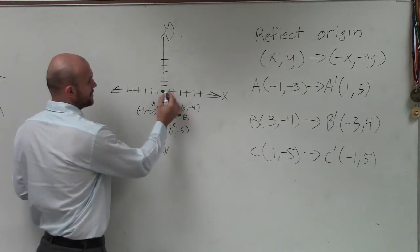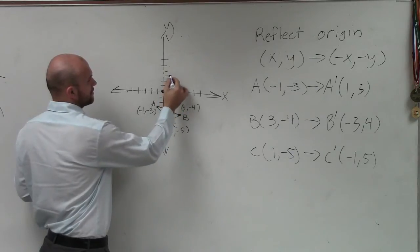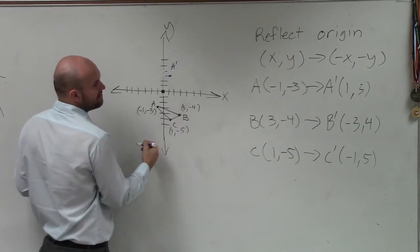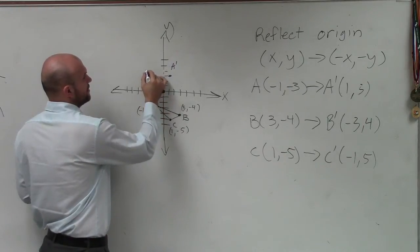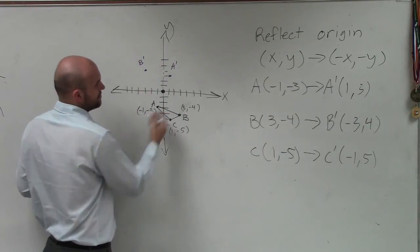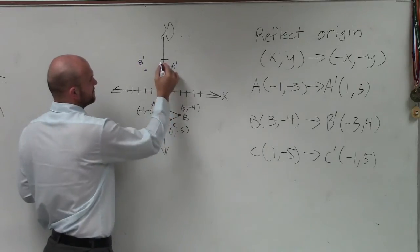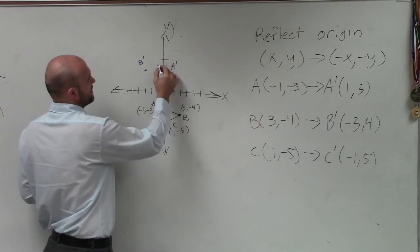So we have 1 comma 3, up 1, over 3, a prime. B prime, negative 3, up 4. And then we have c prime, negative 1, up 5.